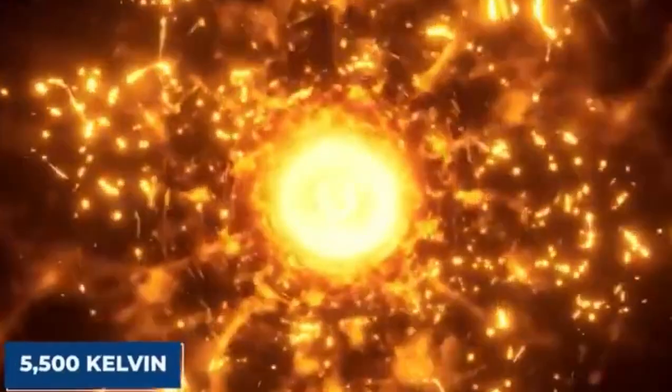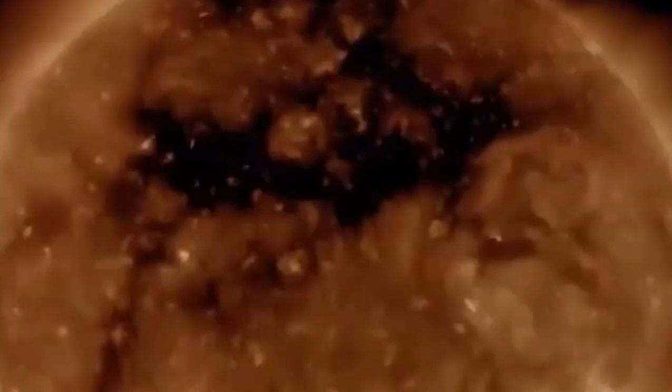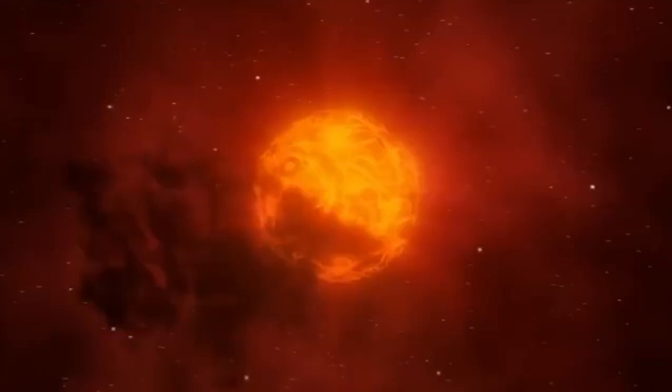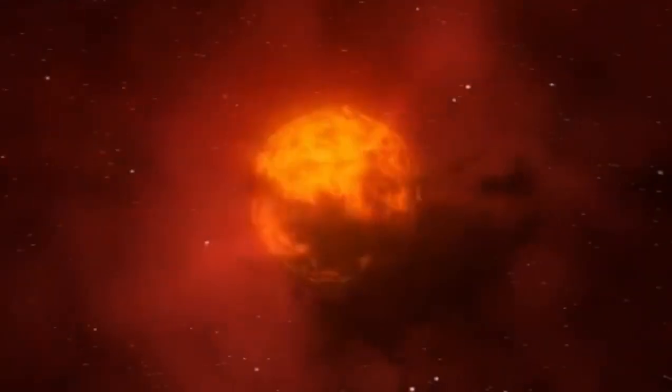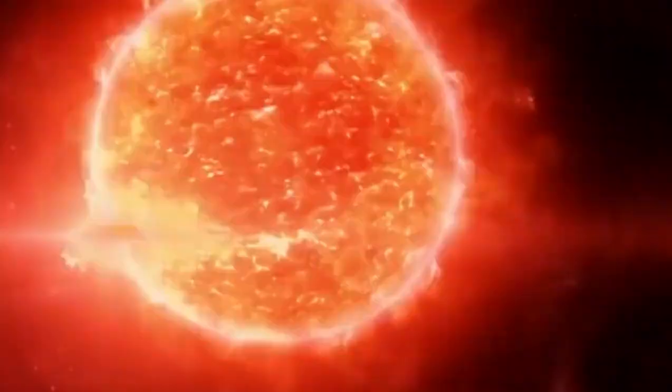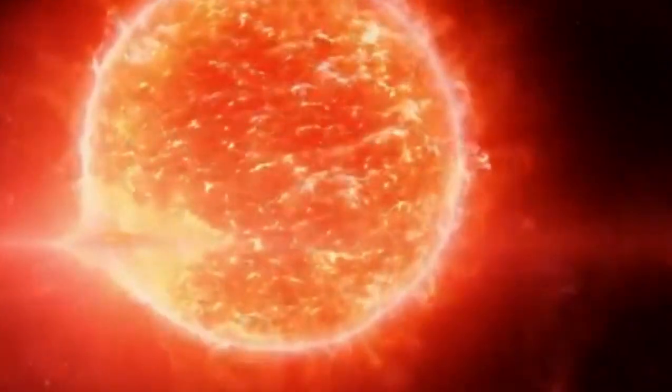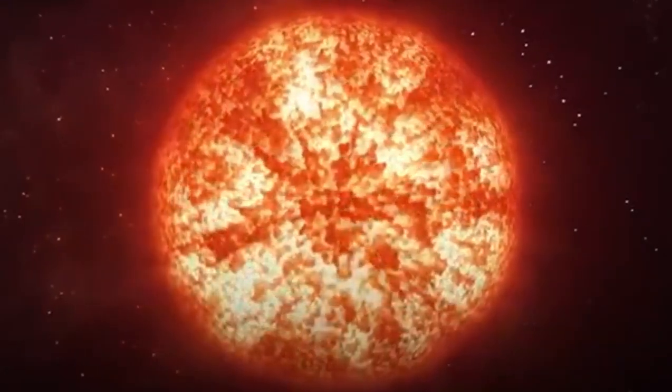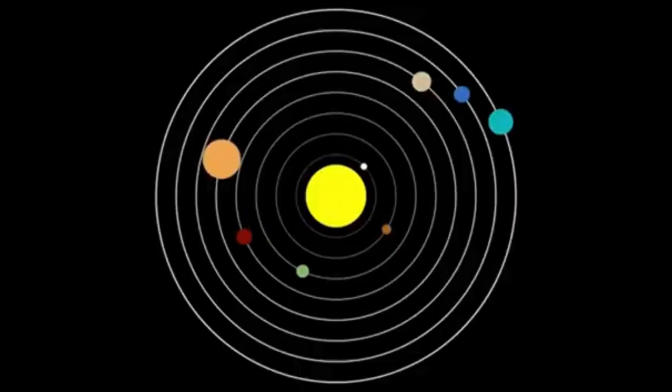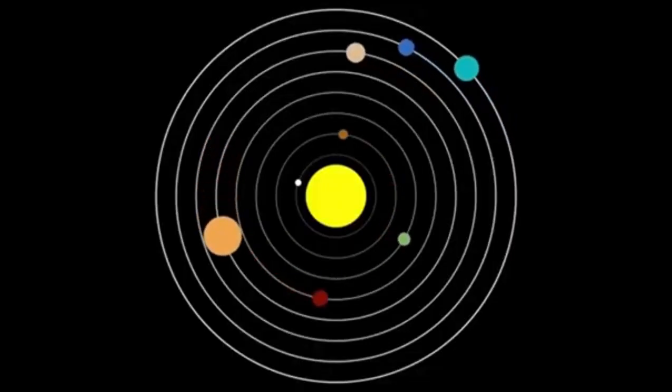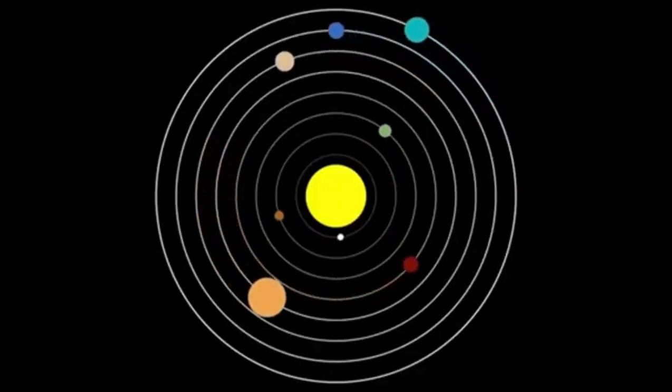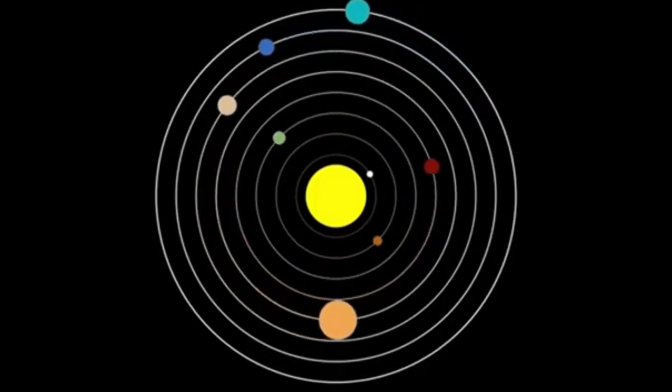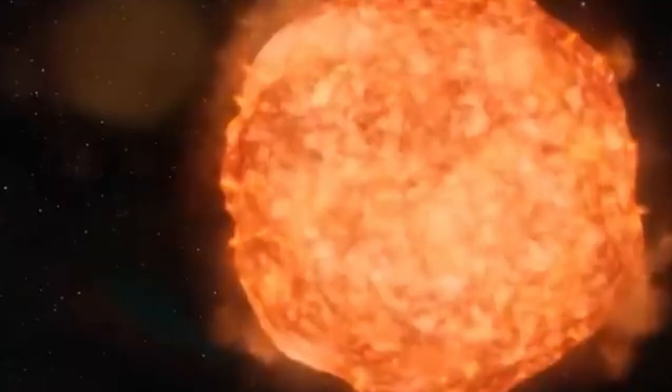This incredible size speaks to its stage in the stellar life cycle. As a red supergiant, Betelgeuse is in the twilight of its existence, a phase characterized by expansion and cooling following a life spent fusing hydrogen into helium in its core. This star, believed to be around 8 to 8.5 million years old, is relatively young in human terms but ancient in stellar lifetimes.